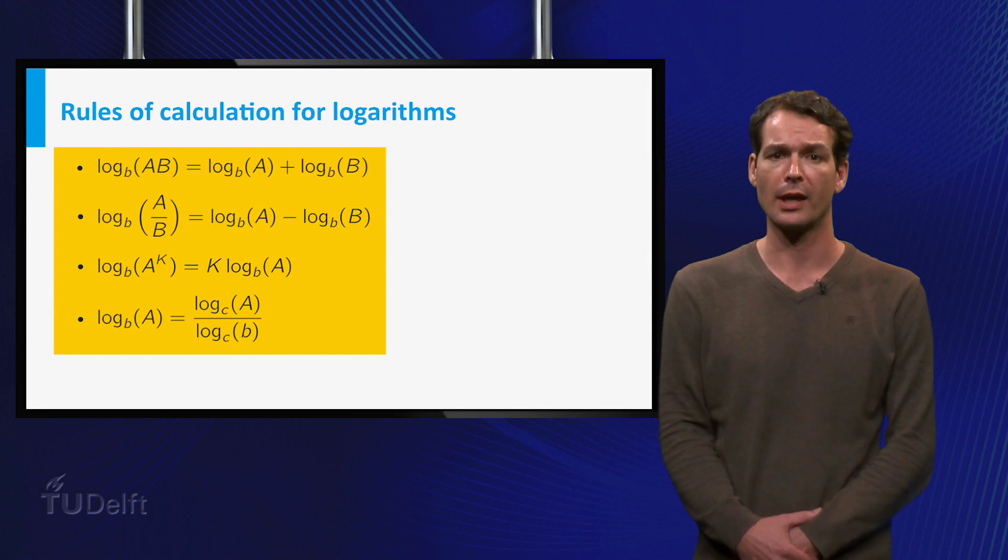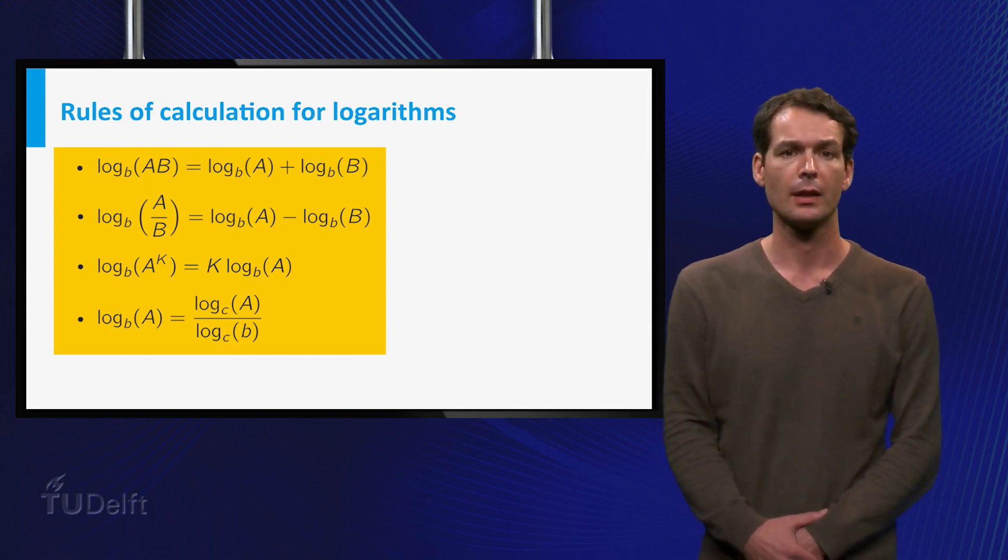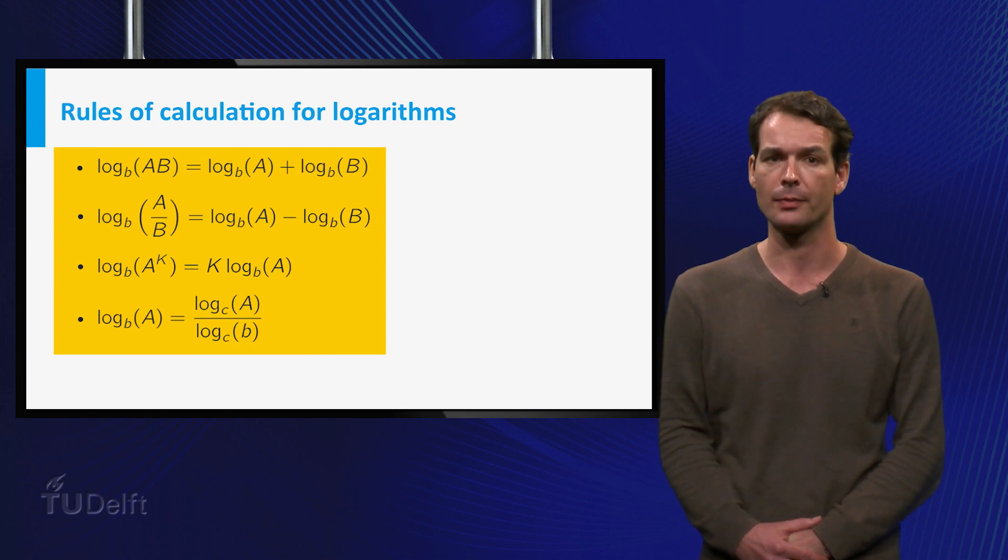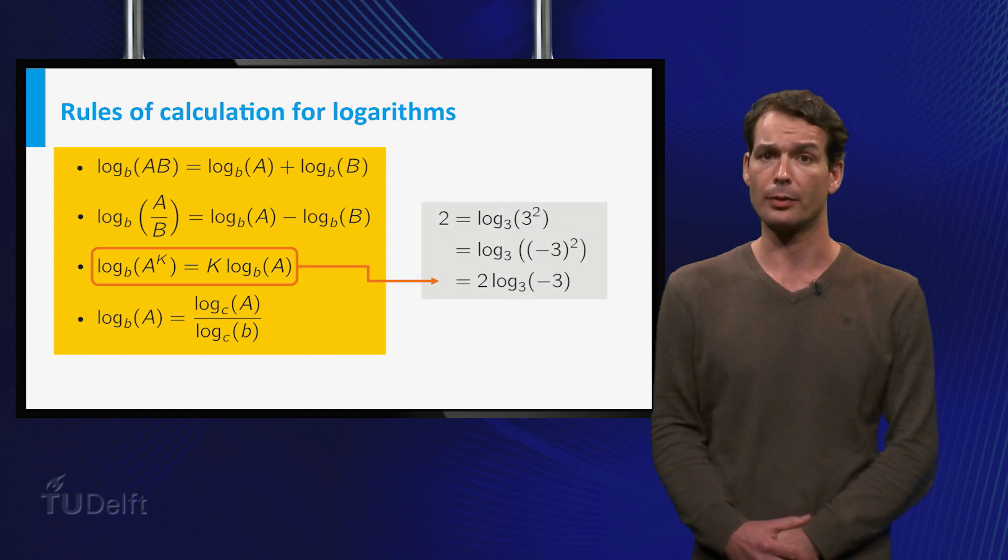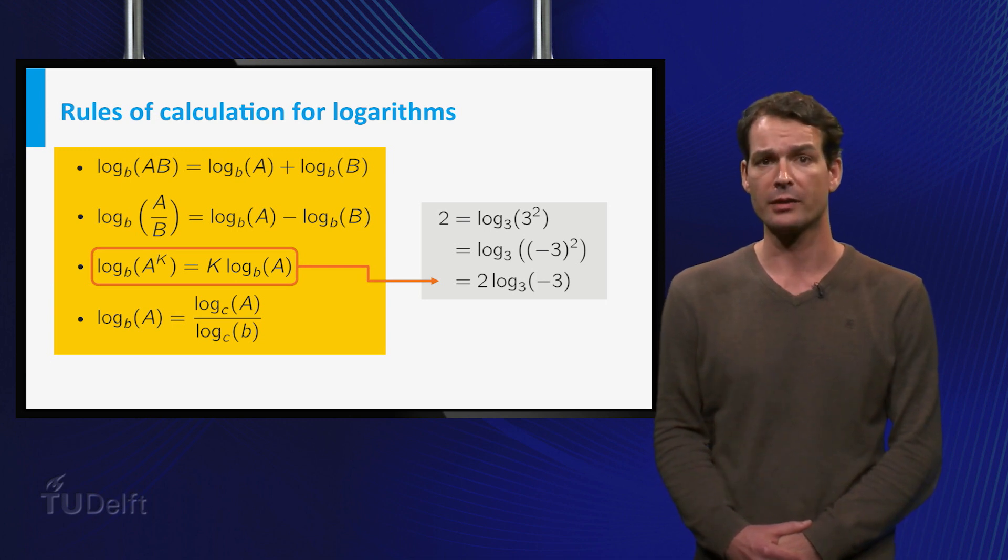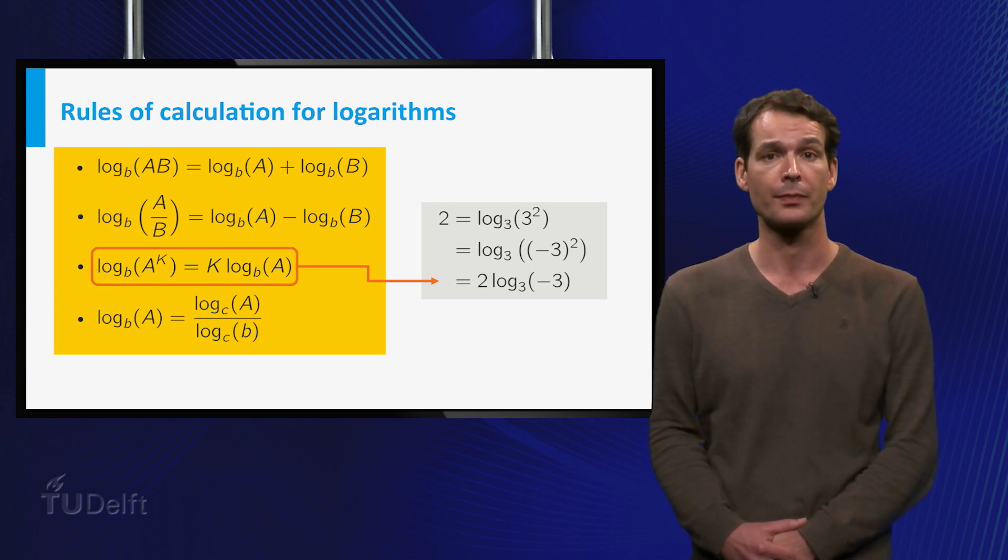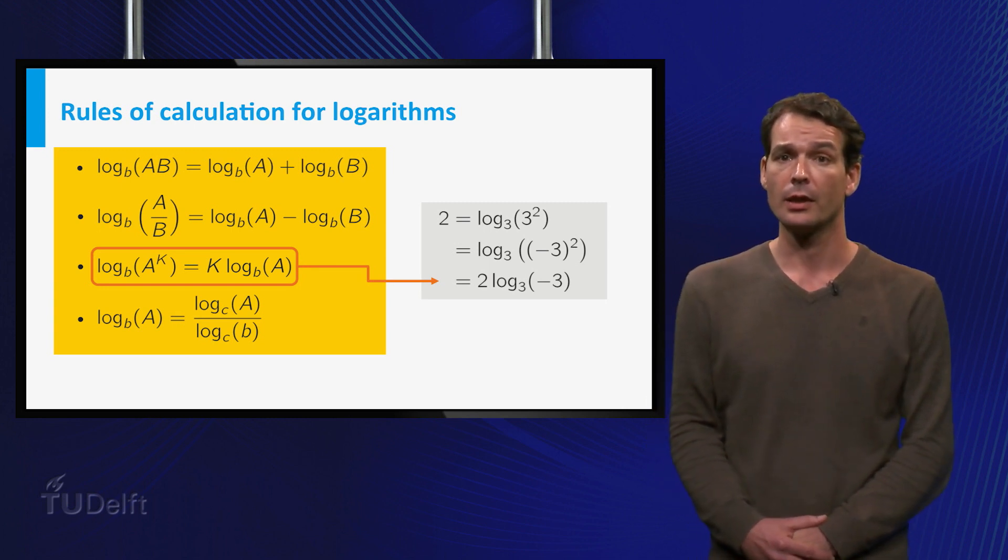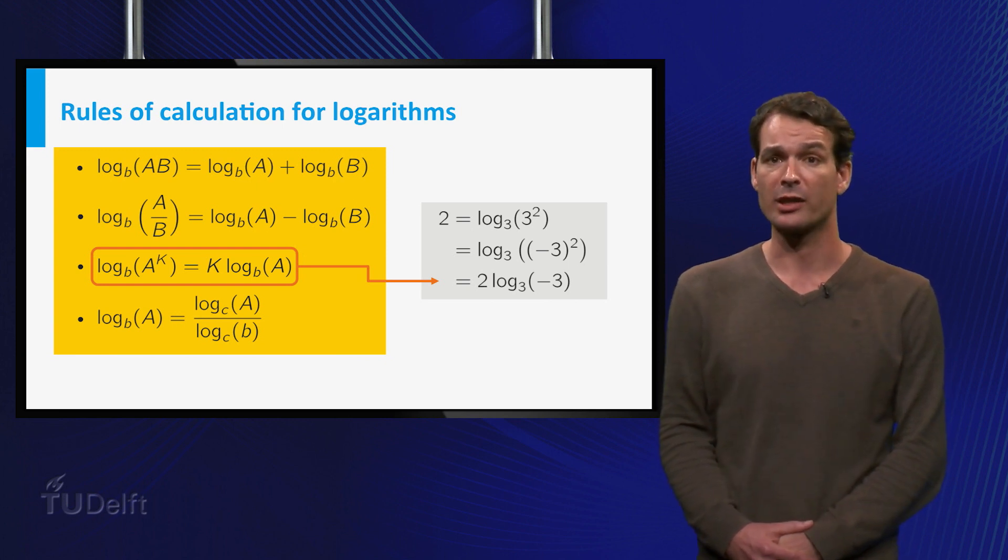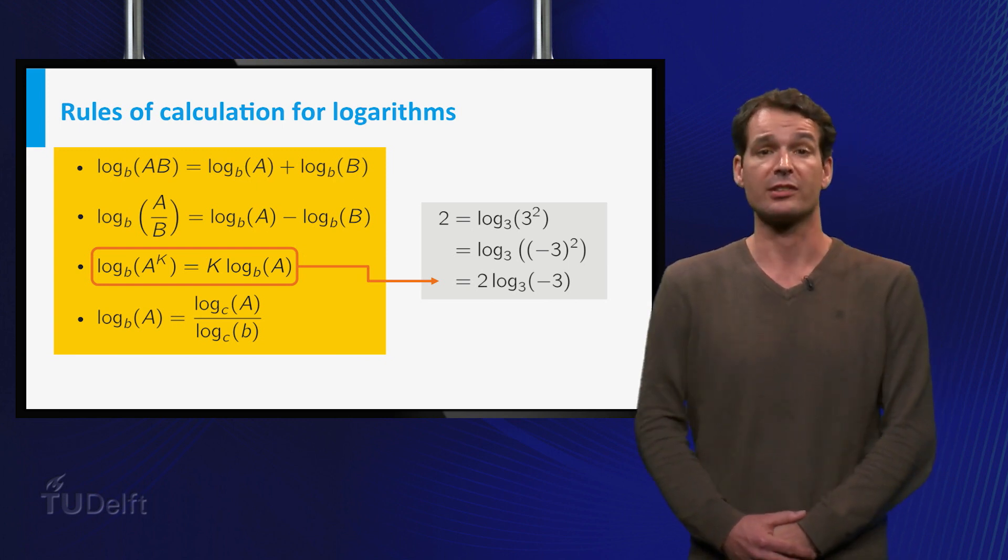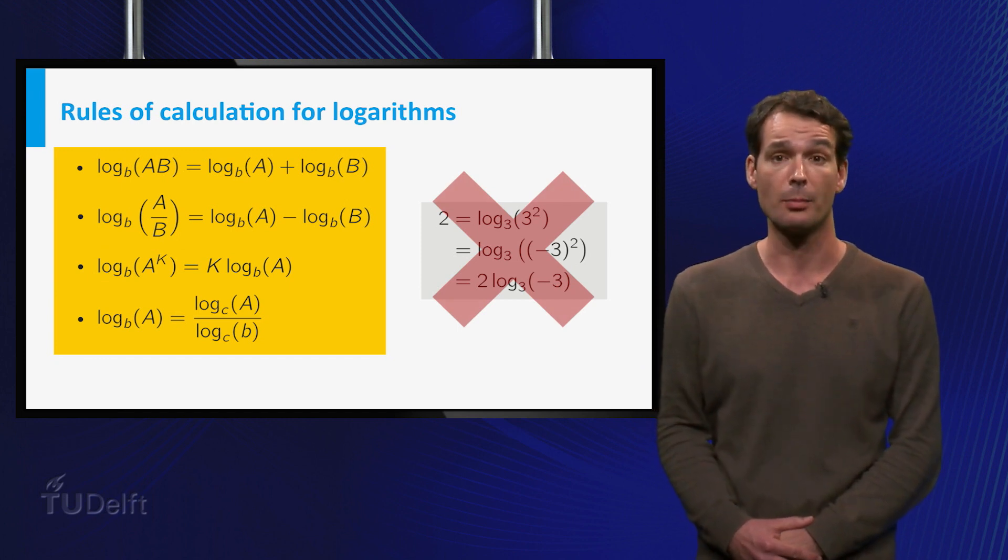Here you see the rules of calculation for logarithms that you should remember. These will be very useful when you have to solve equations involving logarithms. You should however be careful when applying these rules. They only work if all logarithms involved are defined. For example log base 3 of minus 3 squared is equal to 2 because minus 3 squared is equal to plus 3 squared and log base 3 of 3 squared equals 2. Applying the third rule then gives 2 is equal to 2 times log base 3 of minus 3. But this is nonsense because the logarithm of a negative number does not exist.